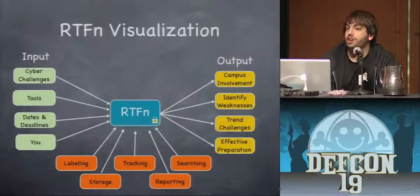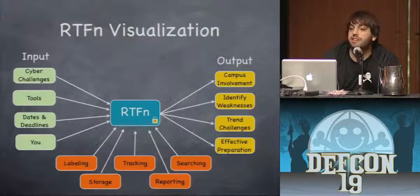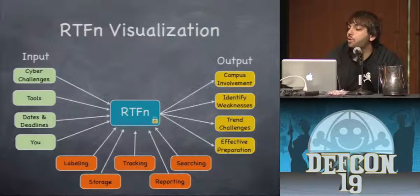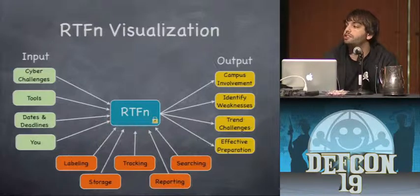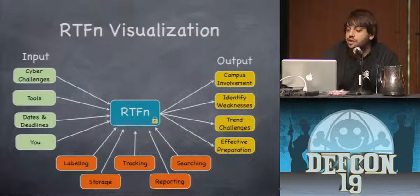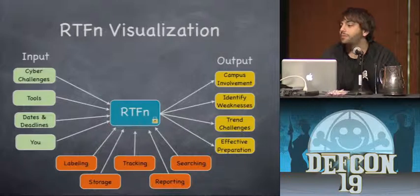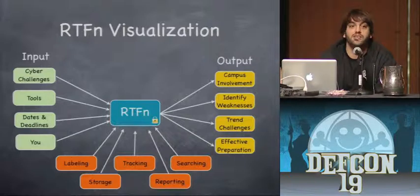RTFN also has reporting and trending functionality to show visualizations of your progress, where you need to improve, and how your attempted improvements have worked. This is a visualization of what RTFN actually is. You input your challenges, tools, competition dates and deadlines, your skill level, and participation. The core of RTFN includes labeling, tracking, searching, reporting functionalities, and tool storage. What you get out is increased campus involvement — more people competing from more places around campus without needing a central location — better identification of weaknesses, trend tracking, and effective preparation based on all the documents you've created.